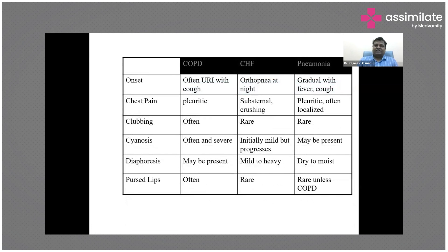Regarding onset, CHF patients often have orthopnea at night and will give a typical history of breathlessness at night. COPD patients often have exacerbations triggered by infections, giving a history of long-standing breathlessness which increased after some infection, fever, or sore throat with associated sputum production. Pneumonia may have gradual or sudden onset with a history of fever.